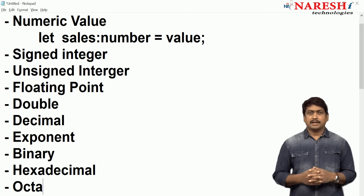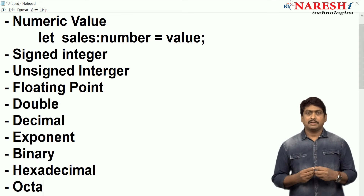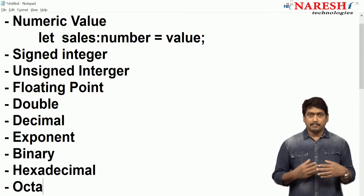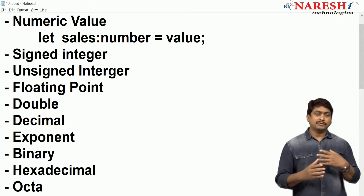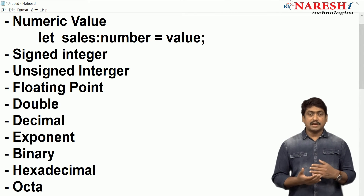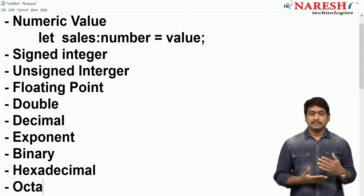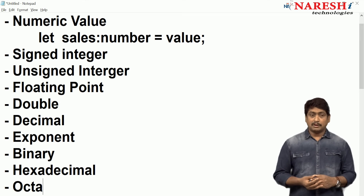A numeric type can handle any one of these types. So if you declare a number type and you want to store a number, then that number can be any one of the following: signed integer, unsigned, floating point, double, decimal, exponent, binary, hexadecimal, and octal.